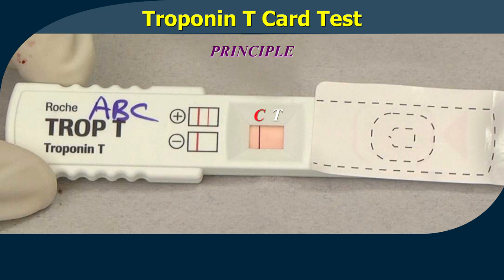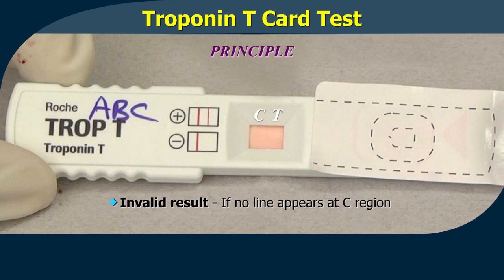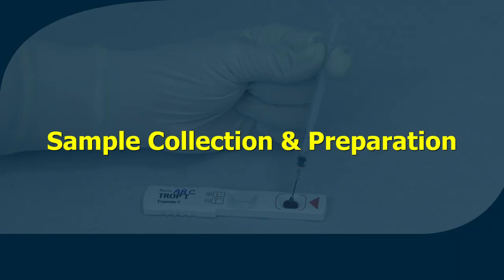only the coloured control line can be seen in the test window. This coloured control band must always appear at the control line position for valid test results. A test result is not valid if the coloured control line does not appear in the test window.